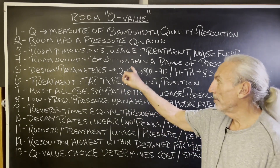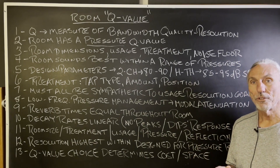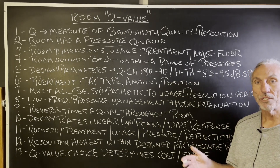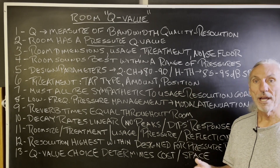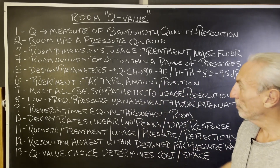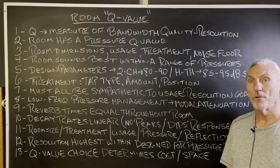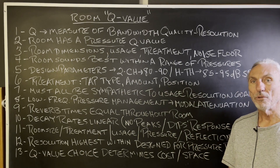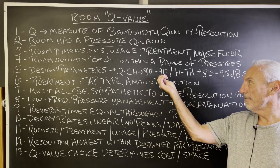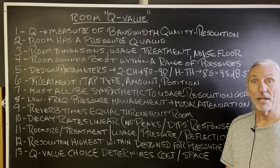So when we design our rooms, we look at the low frequency pressure issues first. We try to design the room based on budget, space requirements, usage, and all those issues. We try to design the room so that it works within a particular pressure range. When we look at two-channel rooms, we look at that 80 to 90 dB SPL. We don't usually design for anything higher than 90 for two-channel — and even that's kind of a push.